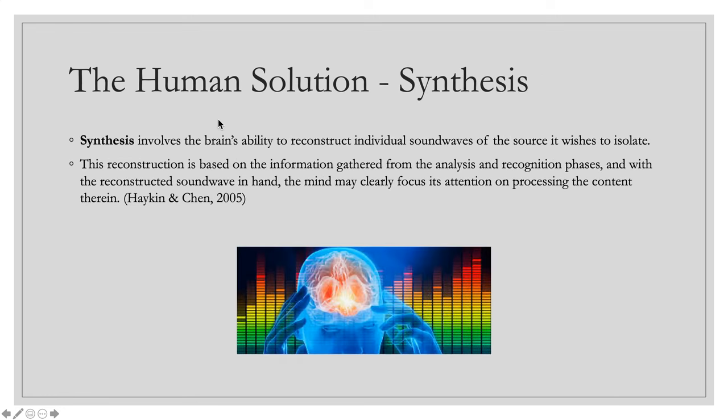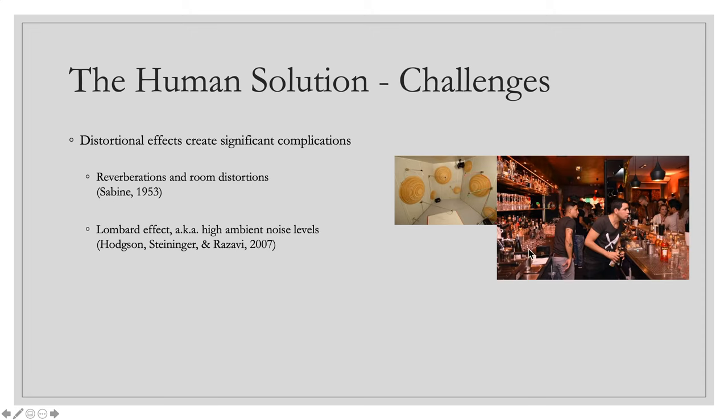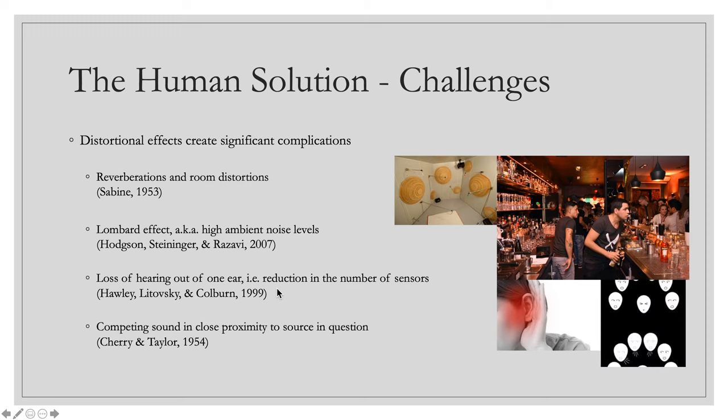The last phase is synthesis and that's simply where once the brain completes the first two phases it actually synthesizes and reconstructs the individual sound wave that it wishes to isolate. And then once it does that it can focus very clearly on what's being said and process the content therein. It's important to talk about the challenges the mind has doing this and certain distortional effects can create significant complications for the mind. Reverberations make it hard for the mind to process the cocktail party problem. The Lombard effect, that's where you go into a restaurant and it's a very high ambient noise level and you have to speak over the noise level, that particular condition makes it difficult for the mind to isolate sound. The loss of hearing, if you reduce the number of sensors essentially from two to one that makes it difficult for the mind to isolate sound. And when a competing sound is in close proximity to the source that you're trying to isolate that makes it difficult for the mind to process sound.